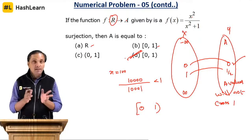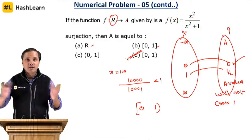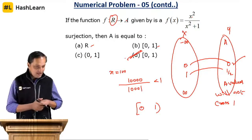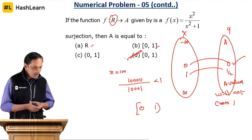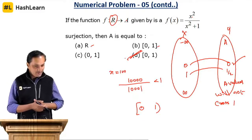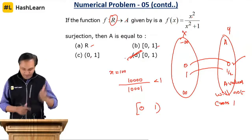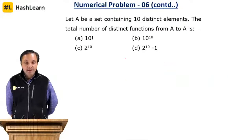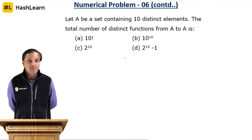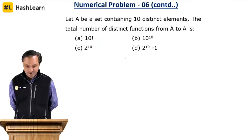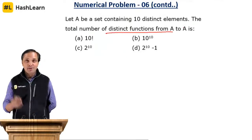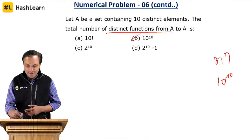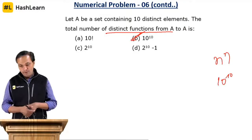Ananya, understood? Whatever value of x you put, the resultant y value will not cross 1 — the answer will be less than 1, because the denominator is just 1 extra. For problem 6: the number of distinct functions from A to A — I told you the formula is N power M. Here it is N power N, that is 10 power 10. That is option B.